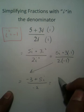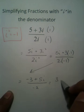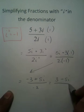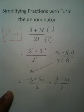So, what happens is all the signs get changed. 3 minus 5i over positive 2.